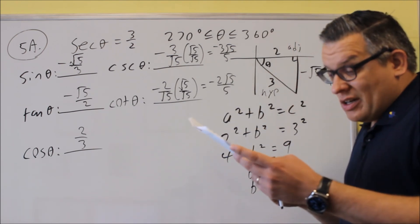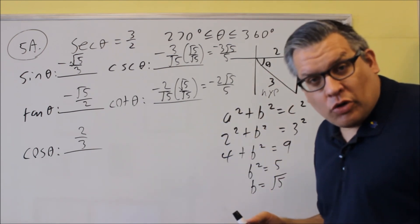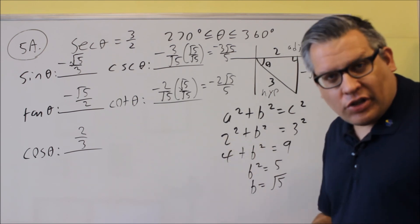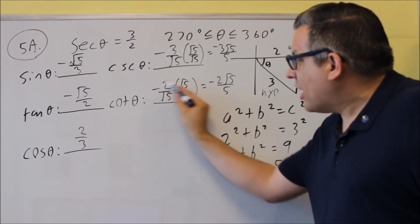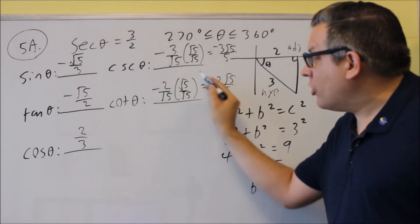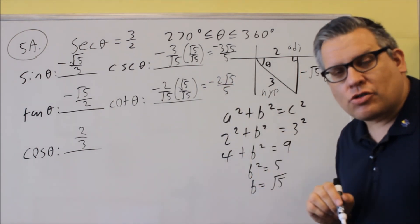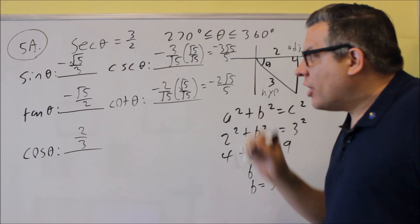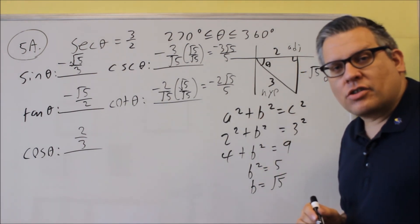On the test, if I don't put that on there, that means you can just leave your answer as negative two over root five, and you wouldn't have to do the extra step. But because the direction said rationalize all roots, that's why we did that for cosecant and cotangent.